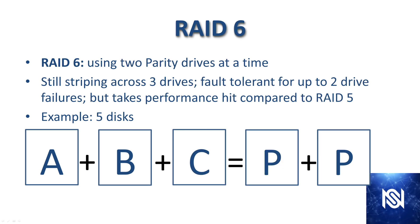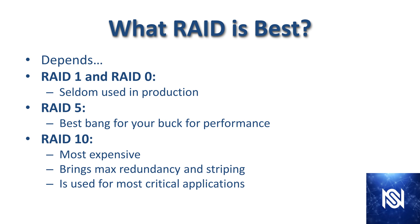RAID 6 is the response to wanting more fault tolerance than losing only one drive at a time. RAID 6 uses two parity drives — you're still striping across A, B, and C, getting triple write speed — but now you're fault tolerant up to two simultaneous drive failures. The extra replication to the second parity drive does take a significant performance hit relative to RAID 5. This example has five disks total.